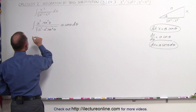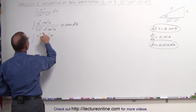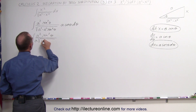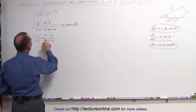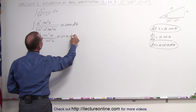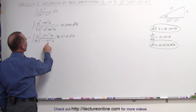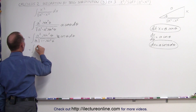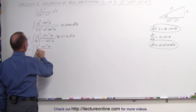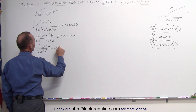Here we can factor out an a. This becomes equal to the integral of a squared times the sine squared of theta. When we factor this out, we get an a times the square root of 1 minus the sine squared of theta — remember, when we take a squared out, you just get an a — and then a times the cosine of theta dθ. Notice that 1 minus the sine squared of theta turns into the cosine squared of theta. So we have a squared times the sine squared of theta divided by the square root of the cosine squared of theta, times the cosine of theta dθ.